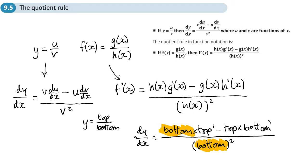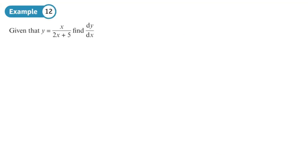On this one, first we're going to identify what's u, what's v, or what's the top and what's the bottom. Top is x, bottom is 2x plus 5. Top dash is one, bottom dash is two. I know I've not used conventional notation, but top dash is just du/dx and bottom dash is dv/dx. Then we just plug those into the formula for the quotient rule.